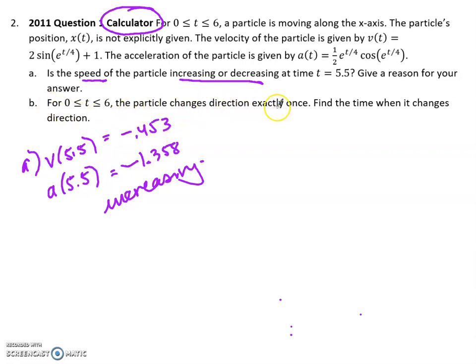For part B, it wants to know, it says the particle changes directions exactly once. Find the time when it changes direction. Changing direction would be when the velocity is 0, when I go from being positive to negative or negative to positive. I graphed that and I looked for the 0, and I solved that by plugging in my velocity equation, found the 0, and did my 0 function and got 5.196.